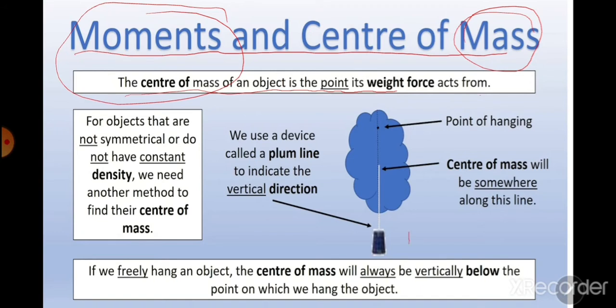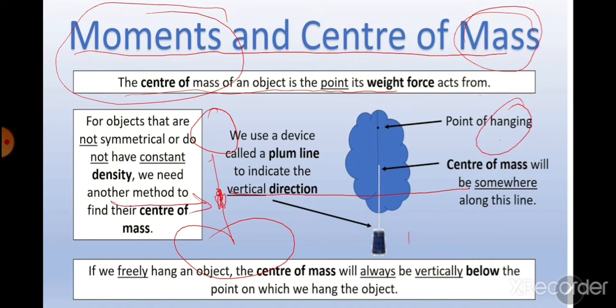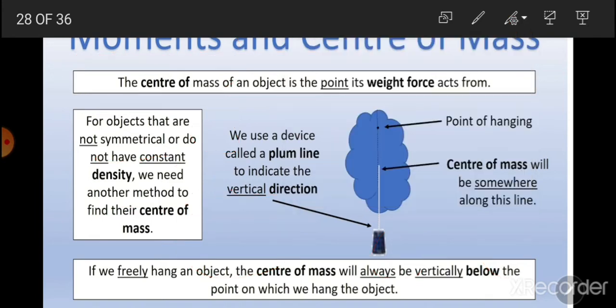For example, if you take any body like this, and this is the center of mass — if you apply force at this point, this will move without rotation. If you apply force here, it will move like this, so it causes rotation. So the point at which force is applied and the body moves without rotation is called the center of mass.